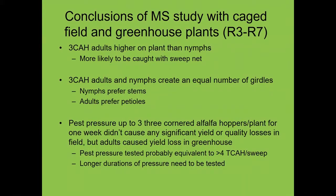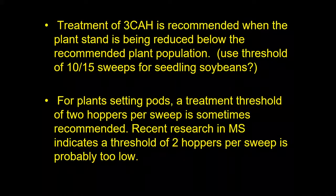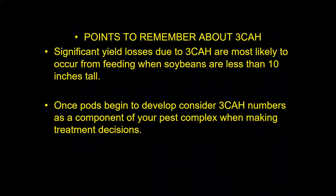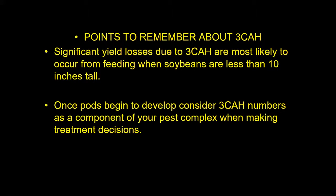Later work in Mississippi indicated that the adults were higher on the plants than the immatures, and that nymphs prefer stems while adults prefer petioles to feed on. They found that when they put three three-cornered alfalfa hoppers per plant for one week, they got a yield reduction in the greenhouse but not in field studies. Treatment is recommended when plant stand is being reduced below the recommended plant population. For plants setting pods, a treatment threshold of two hoppers per sweep is sometimes used, though recent research suggests this may be too low. Significant yield losses are most likely when soybeans are less than ten inches tall, and once pods begin to develop, hopper numbers should be considered as part of your overall pest complex.